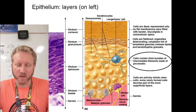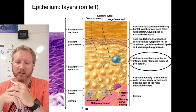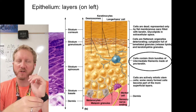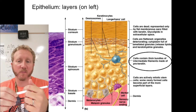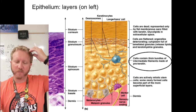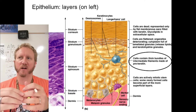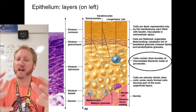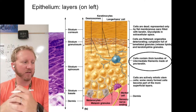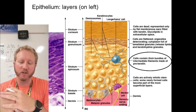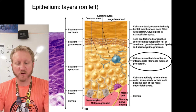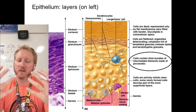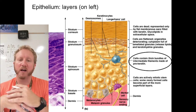Moving up is the stratum spinosum — a thick intermediate layer where cells start flattening and becoming waterproof. An interesting trivia note: it's called stratum spinosum because cells originally looked spiny under the microscope. As technology improved, we realized that spiny appearance was artifactual — created by our preparation technique. However, the name stuck.